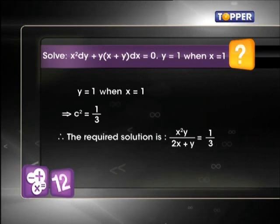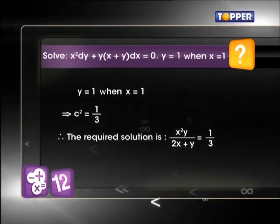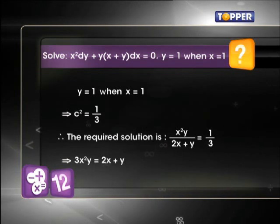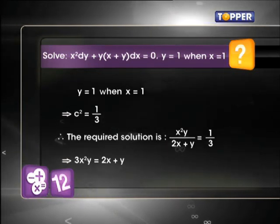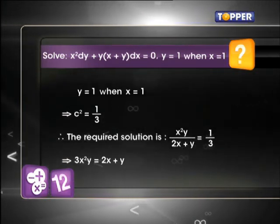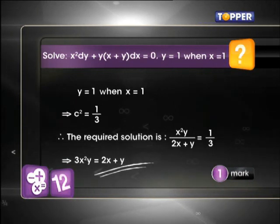Now, substituting this value of c², the required solution of the equation is 3x²y = 2x + y. So this completes the solution.